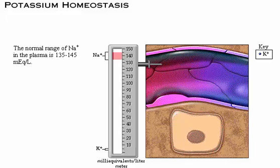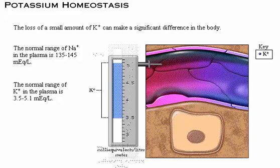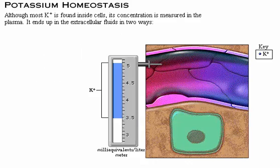The normal range of sodium in the plasma is 135 to 145 milliequivalents per liter. Compare this to the normal range of potassium in the plasma, which is 3.5 to 5.1 milliequivalents per liter. Because potassium has a much smaller range, the loss of a small amount of potassium can make a significant difference in the body. Although most potassium is found inside cells, its concentration is measured in the plasma.